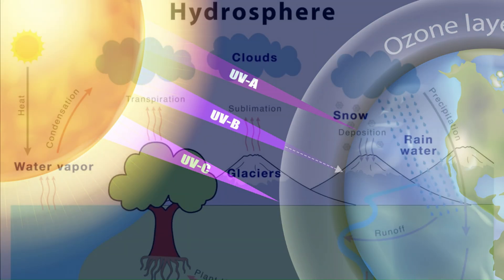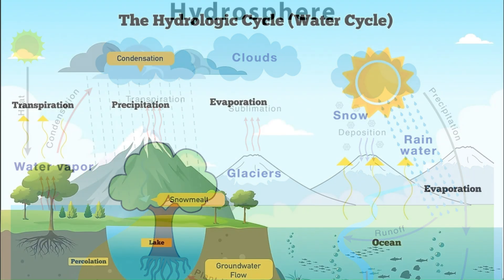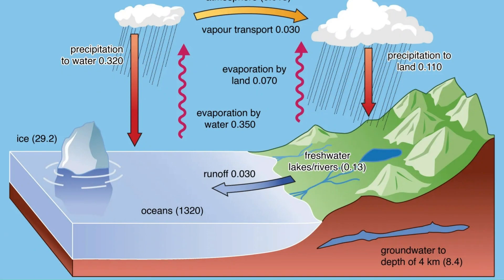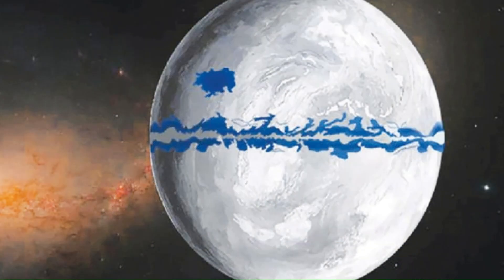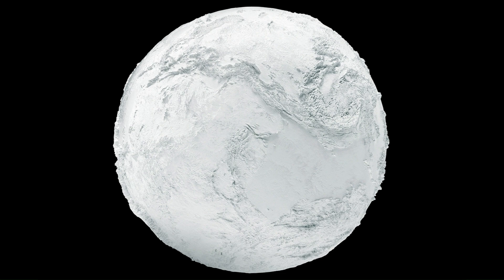The hydrosphere refers to all the Earth's water, including oceans, rivers, lakes, groundwater, and ice. The formation of the hydrosphere is closely tied to the cooling of Earth and the condensation of water vapor in the atmosphere.